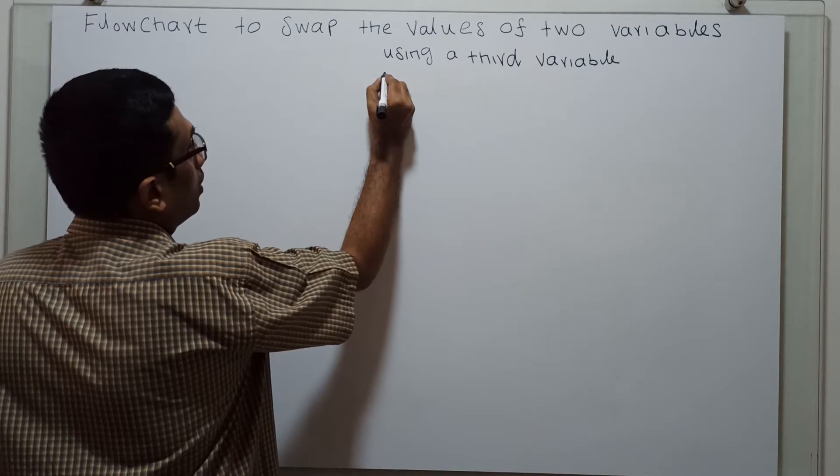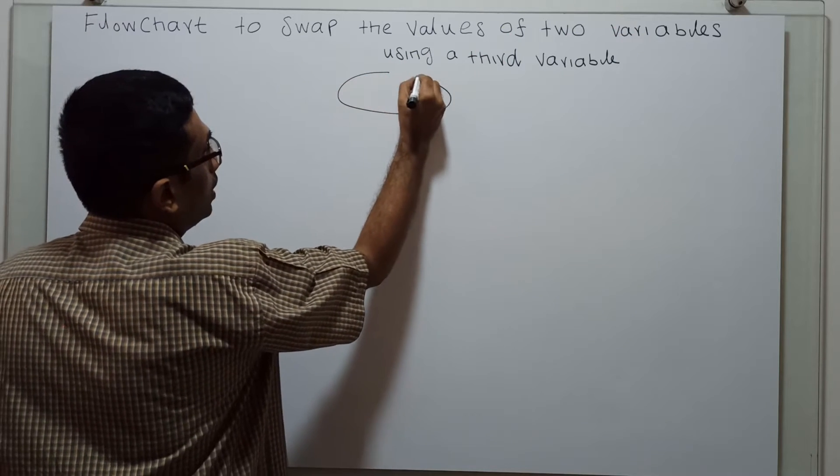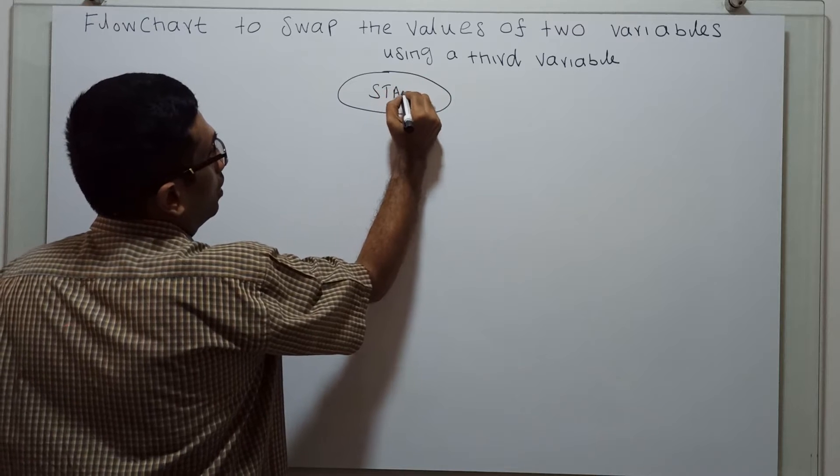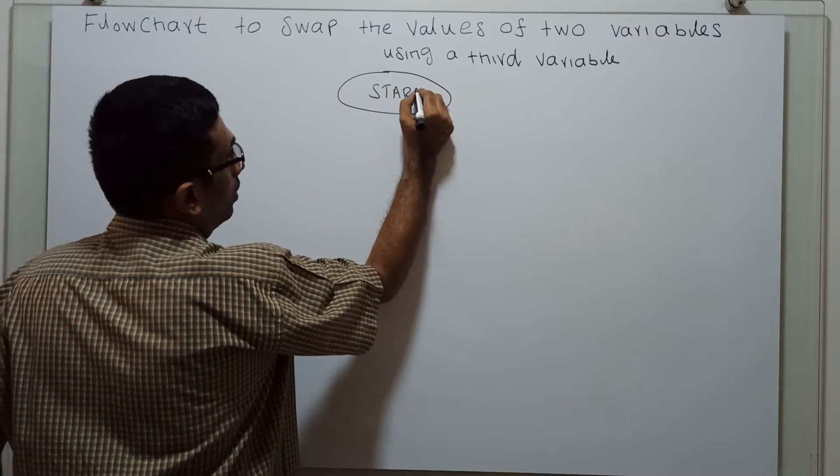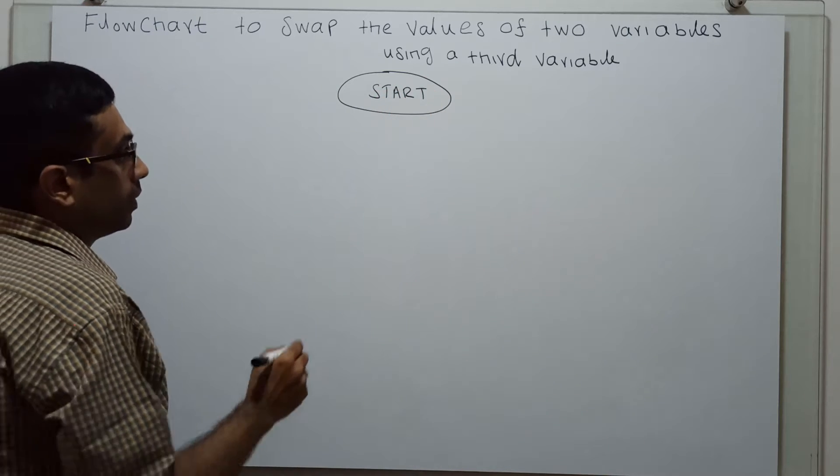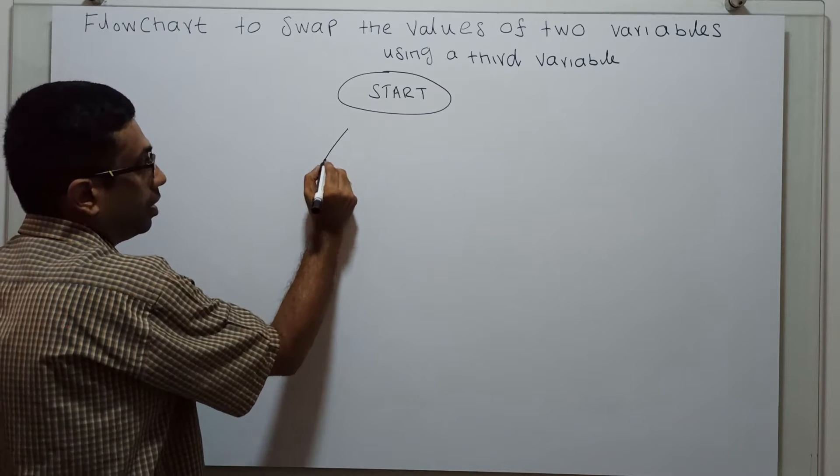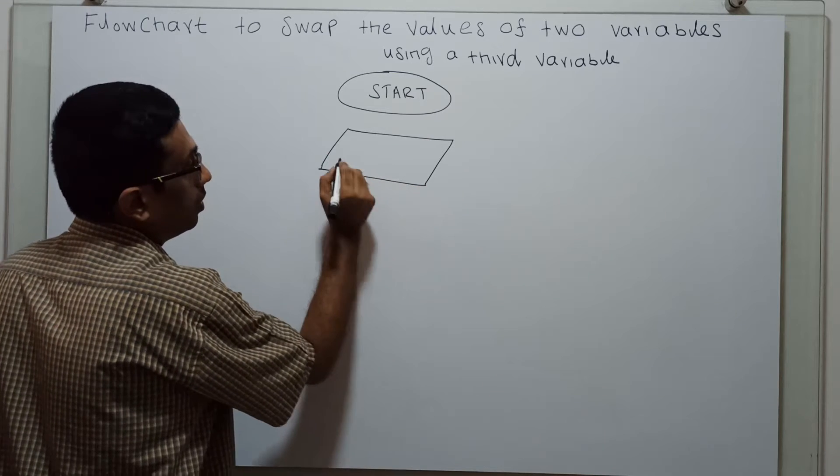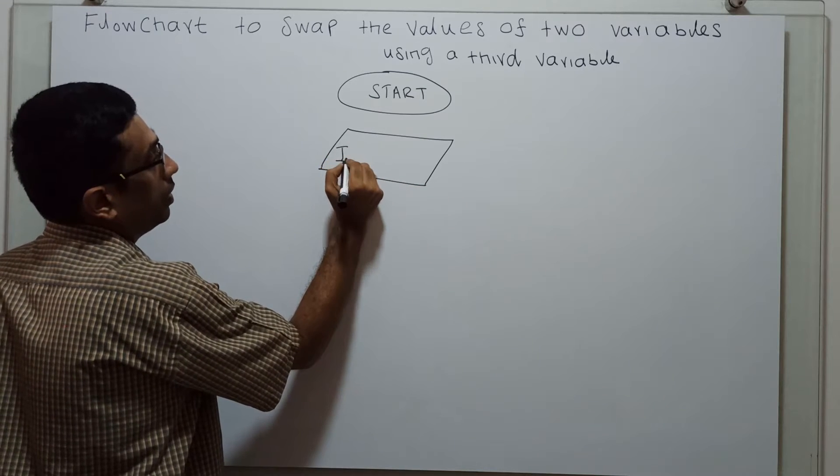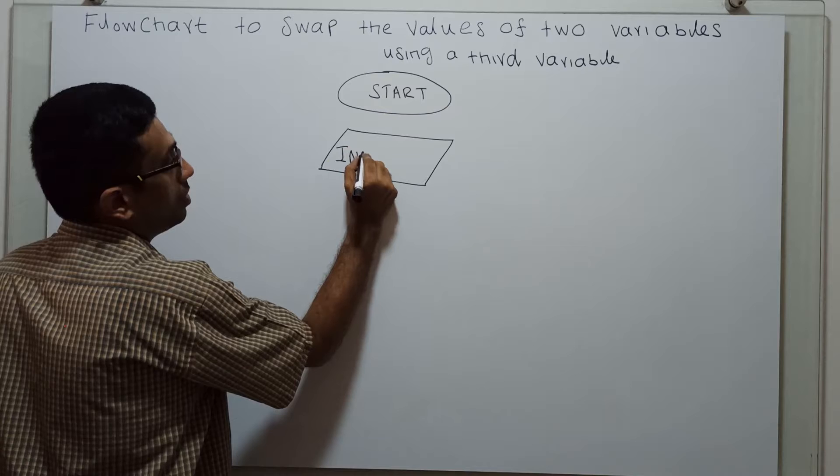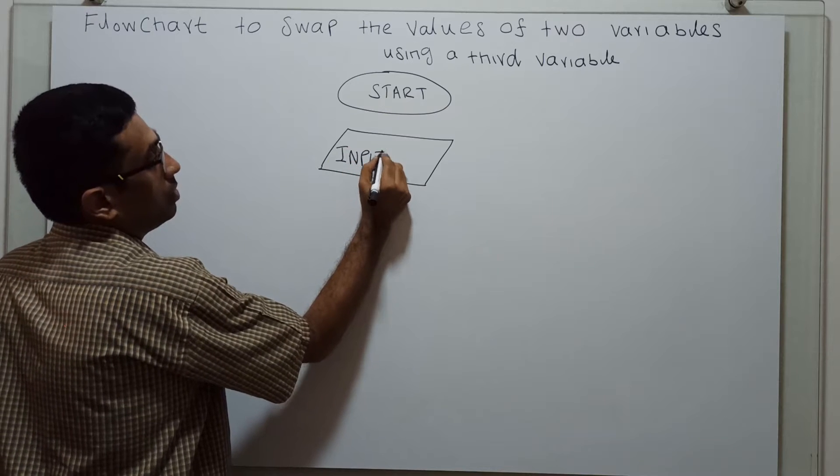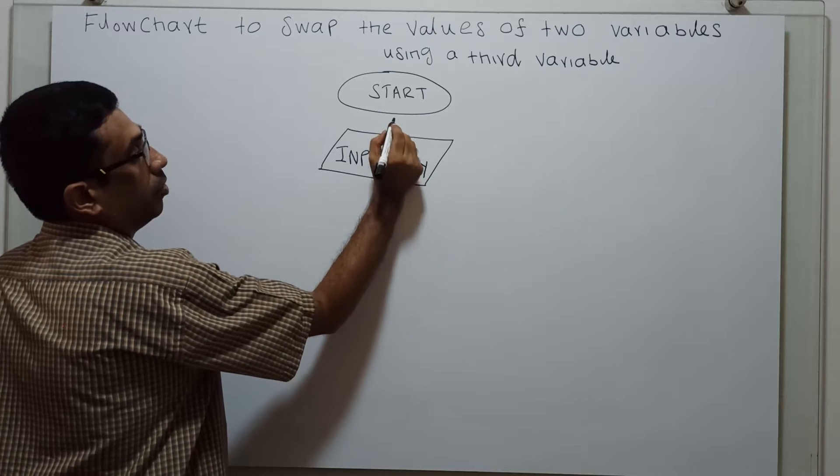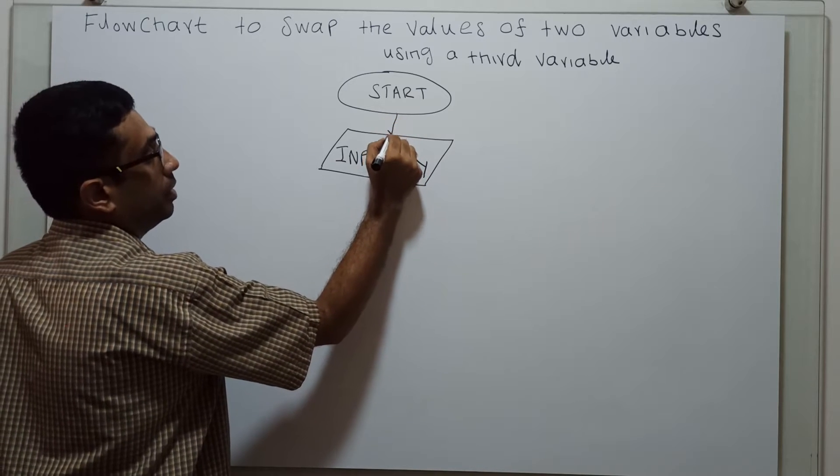This is the logical start of the flowchart. Now, I am obtaining input in x and y. Input x comma y is my input.